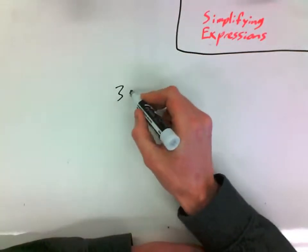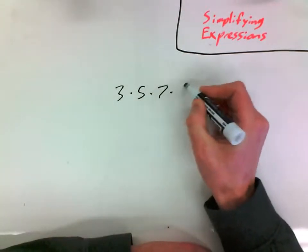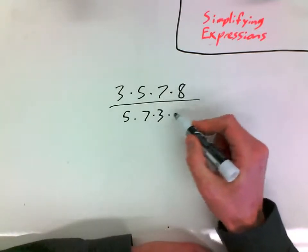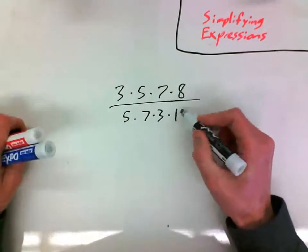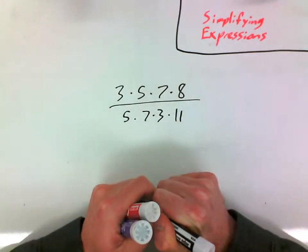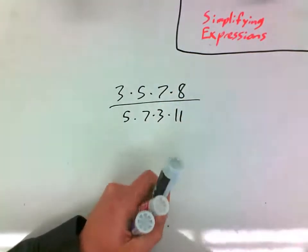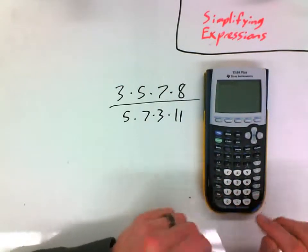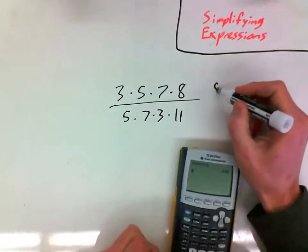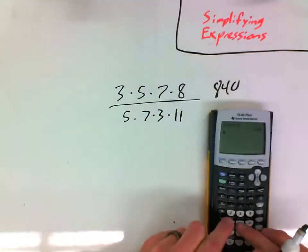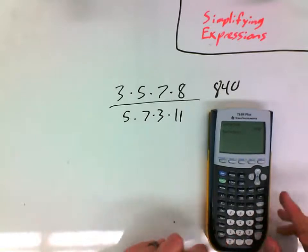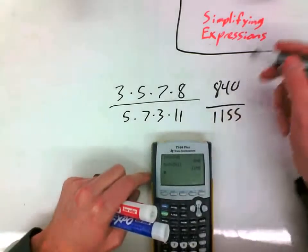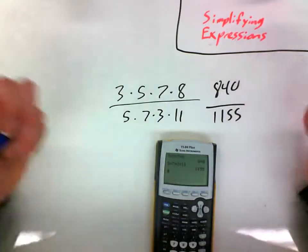So here's an expression that's kind of weird. If I were going to solve this thing, I mean I could just go to my calculator and do, okay, well the top is 3 times 5 times 7 times 8, that's 840, and then do 5 times 7 times 3 times 11, and I could divide them and be squared away to go.